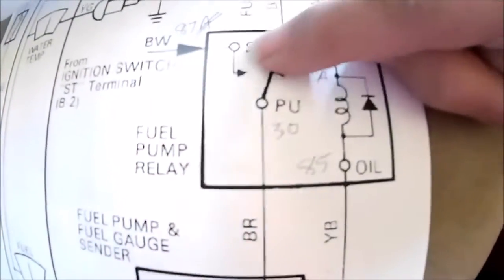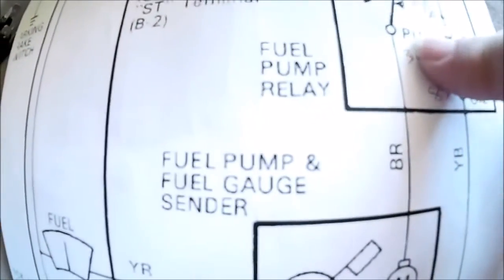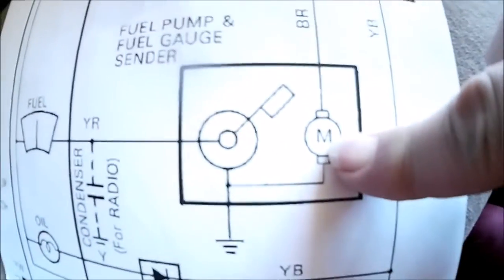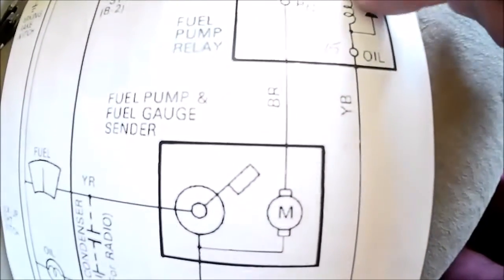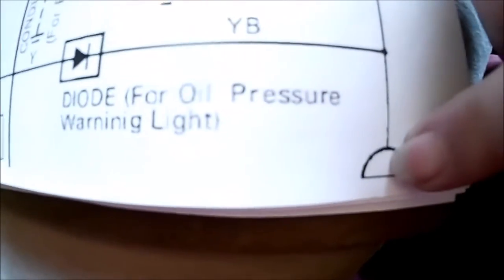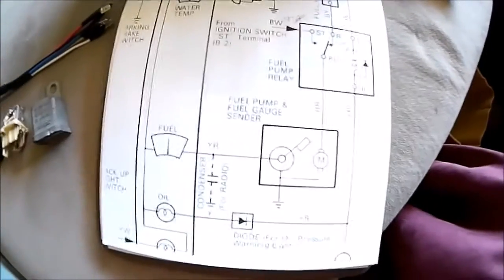As you can see, it's pretty well marked. Regular ignition comes from there - there's run, there's start from the start terminal. The other side of the contacts goes to the fuel pump which goes to ground. This comes down to the activation coil which goes down to a wire that connects to the oil sender.